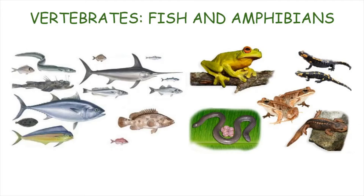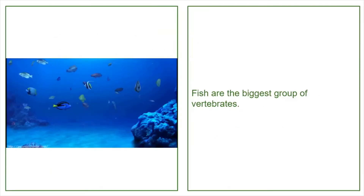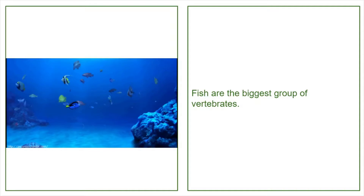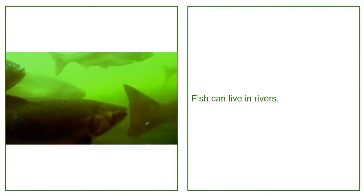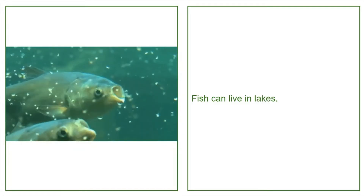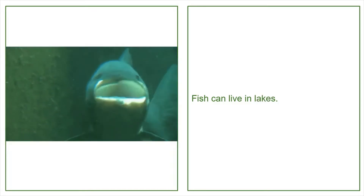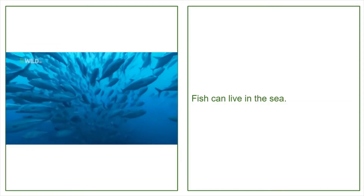Vertebrates: fish and amphibians. Fish are the biggest group of vertebrates. Fish can live in rivers, fish can live in lakes, and fish can live in the sea.